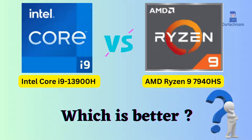In this video, I will compare the Intel Core i9-13900H processor with the AMD Ryzen 9 7940HS, and I'll provide a conclusion on which one performs better.